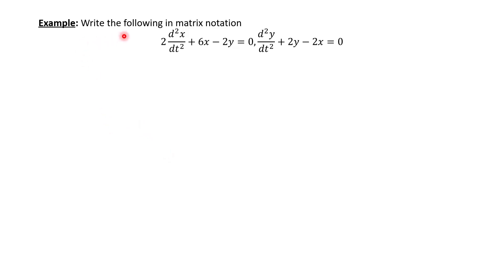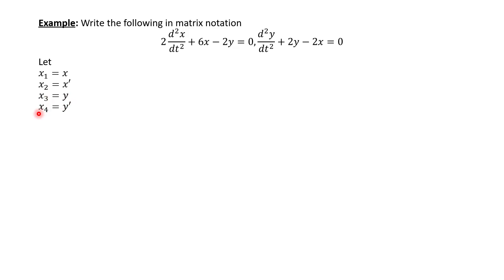Let's try this one more time — write the following system in matrix notation. Notice we have two equations with x's and y's, both up to the second derivative; these are two coupled second-order differential equations. First, define the unknowns: let x sub 1 equal x, x sub 2 equal x prime, x sub 3 equal y, and x sub 4 equal y prime. We only need to go up to the first derivatives in our variable list because for a second-order equation you go to one less than the order.